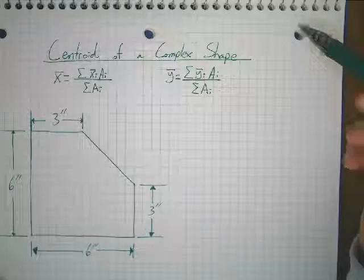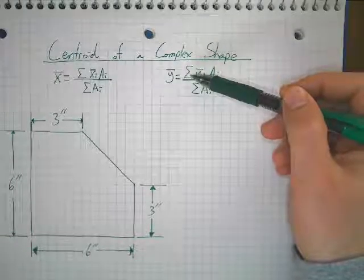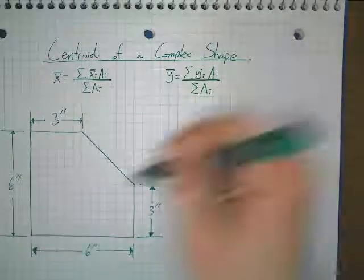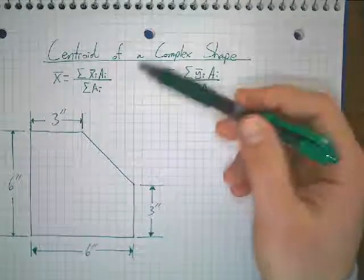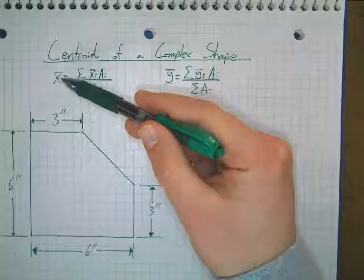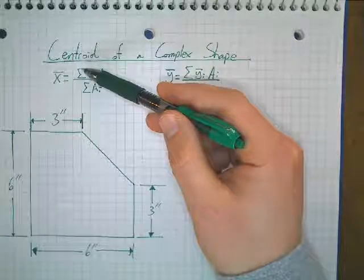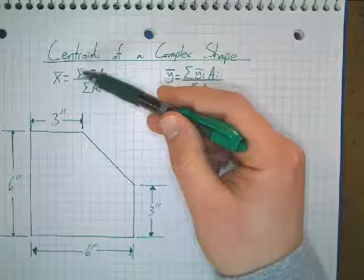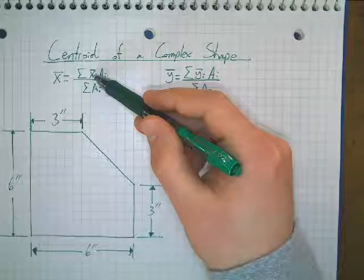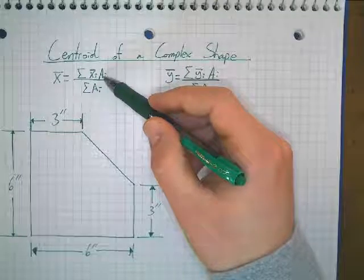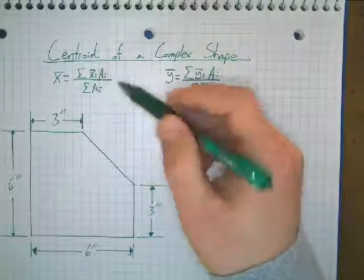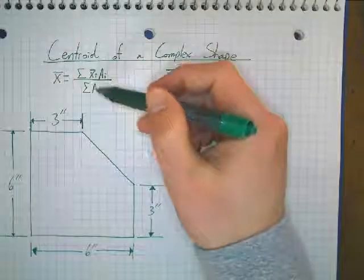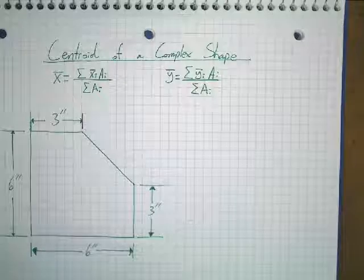So to do the centroid of a complex shape, we're going to use these equations right here. Our centroid has an x location and a y location. I always like to say x is my left, right, y is my up and down. For a complex shape, our equation is X bar equals the sum - this sigma symbol stands for the sum - so we're adding together our individual shapes x bar times our individual shapes area. We multiply those and add it to the next shape and the following shape, then we divide that by the sum of all of the areas of our shapes. We do the same thing for y and for our y bar location.